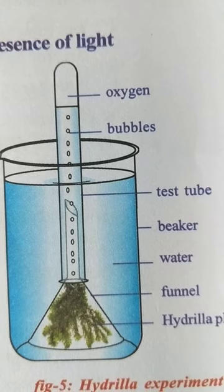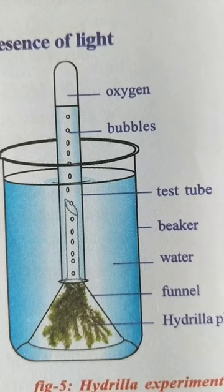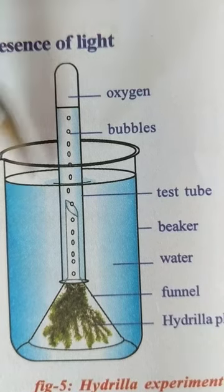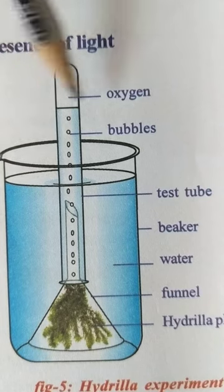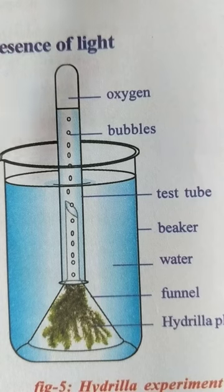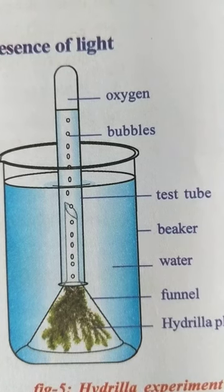For this you have to write: Aim - to prove that oxygen is released during the process of photosynthesis. Apparatus - we need a glass beaker, a test tube, a thistle funnel, twigs of Hydrilla, and water. Procedure - take a glass beaker.